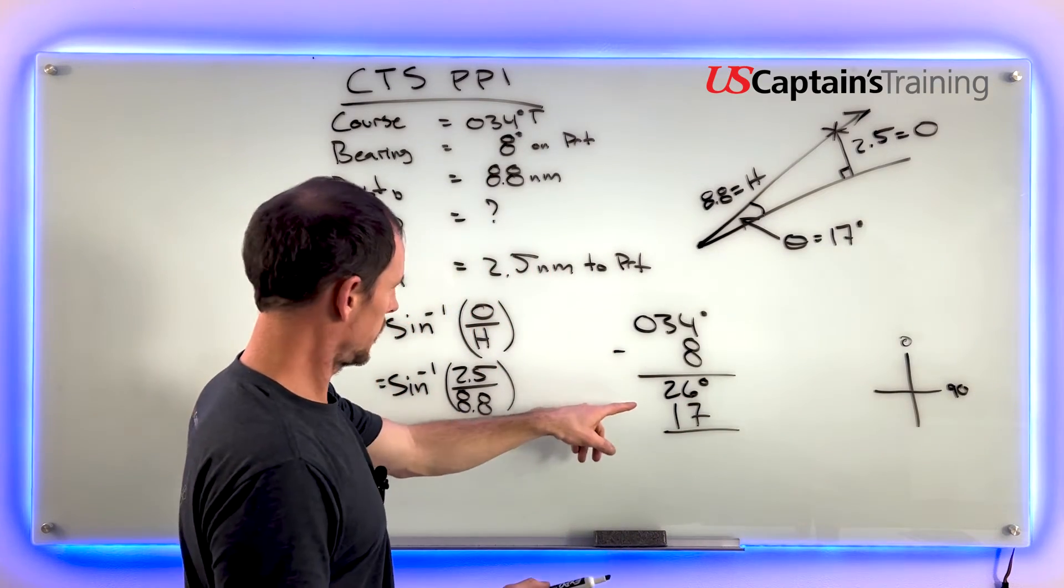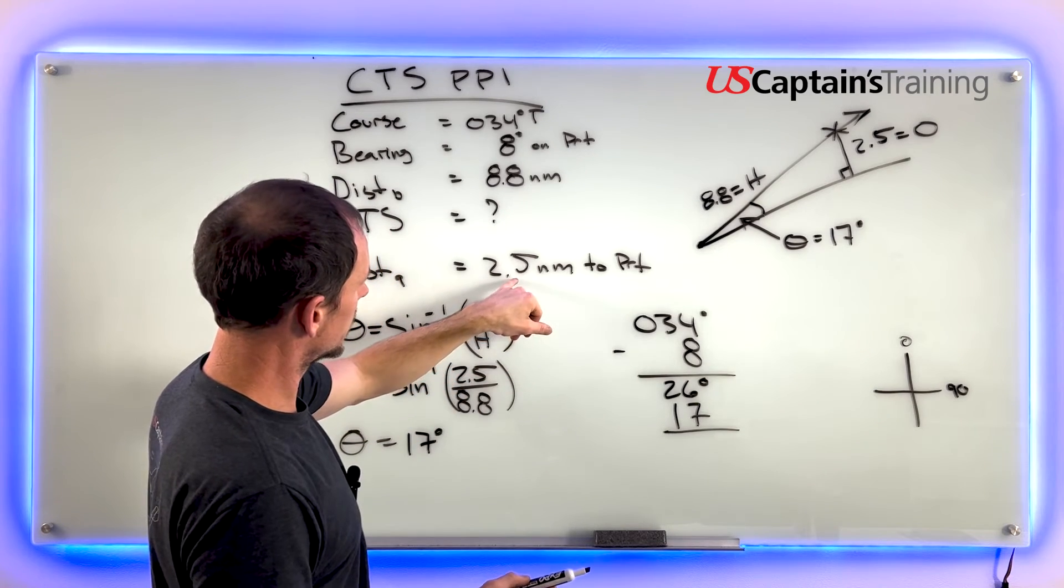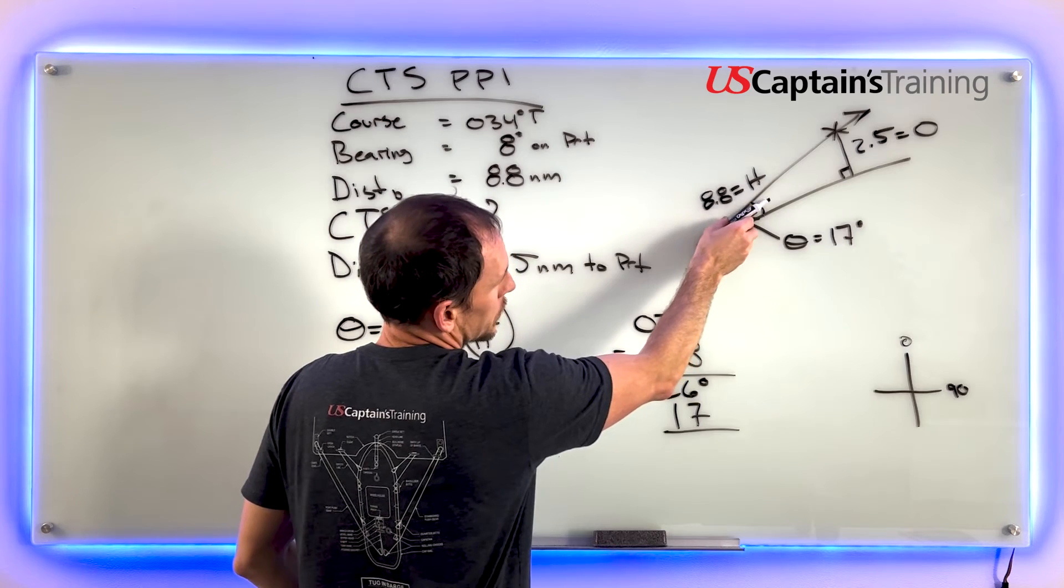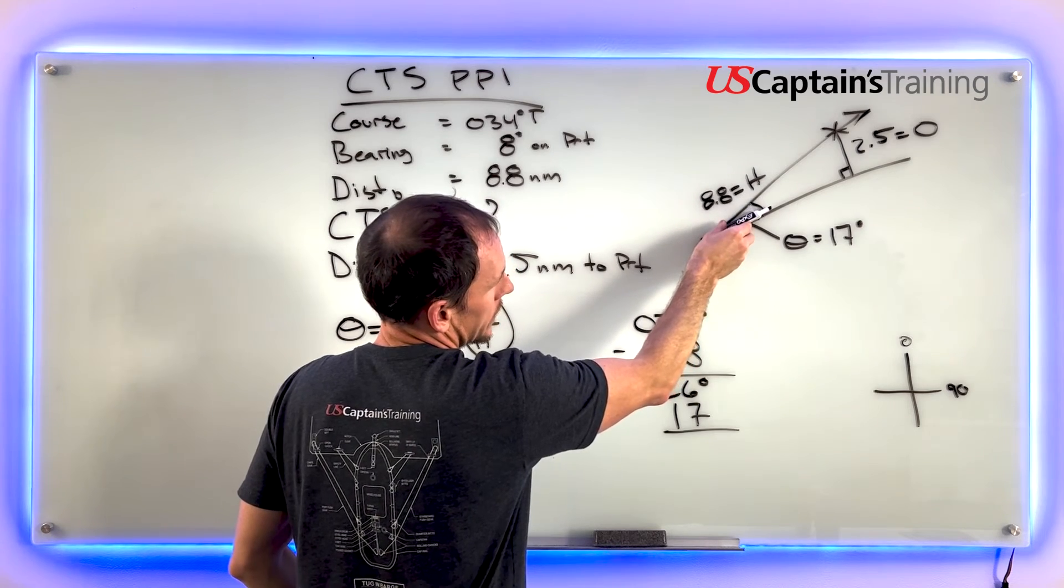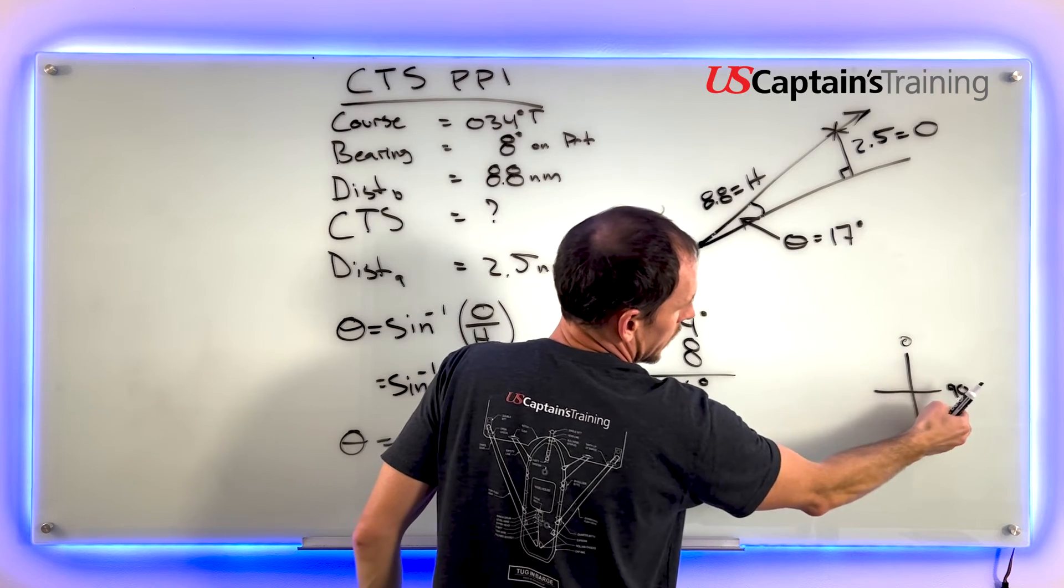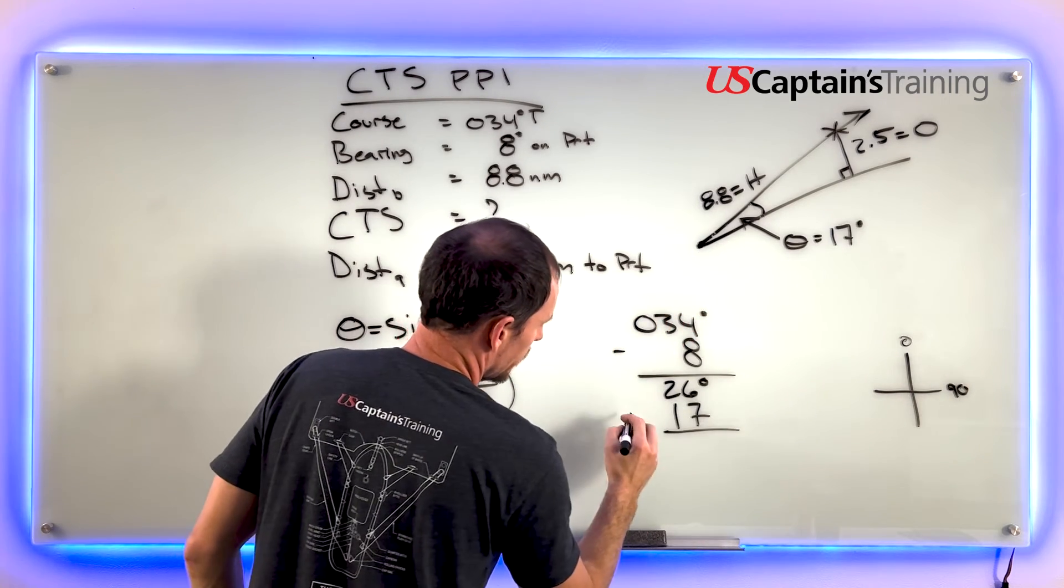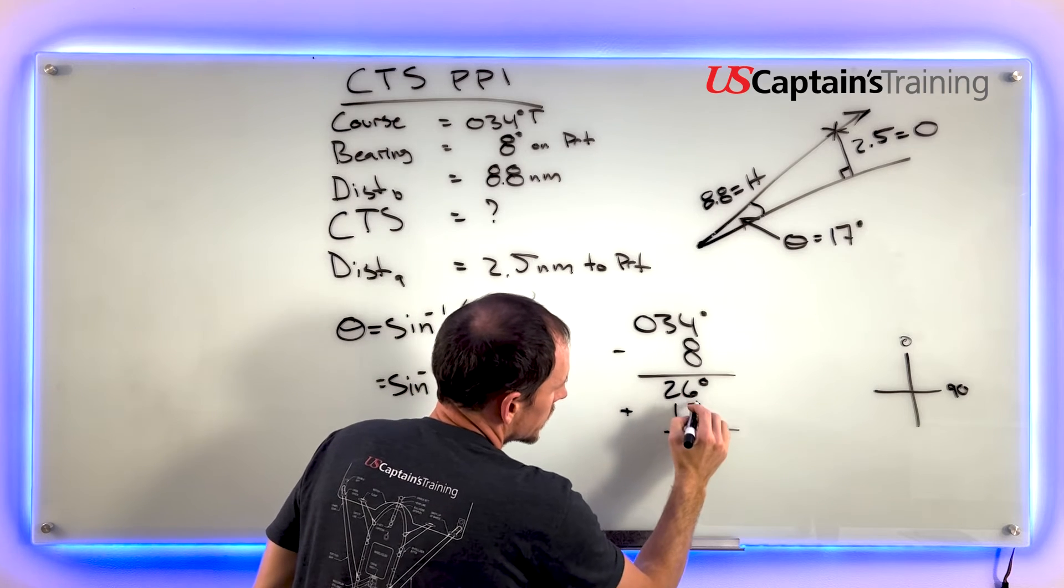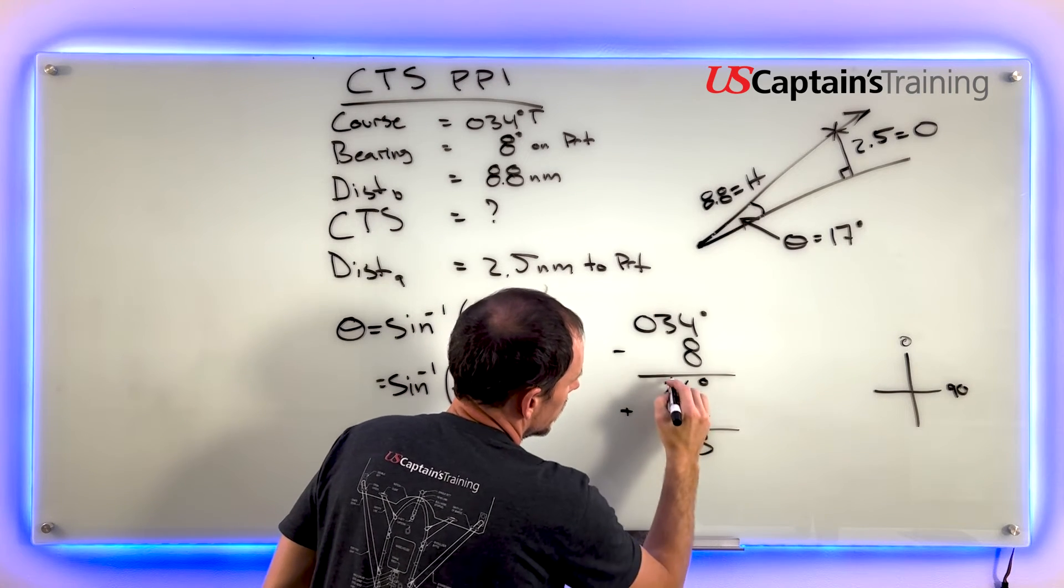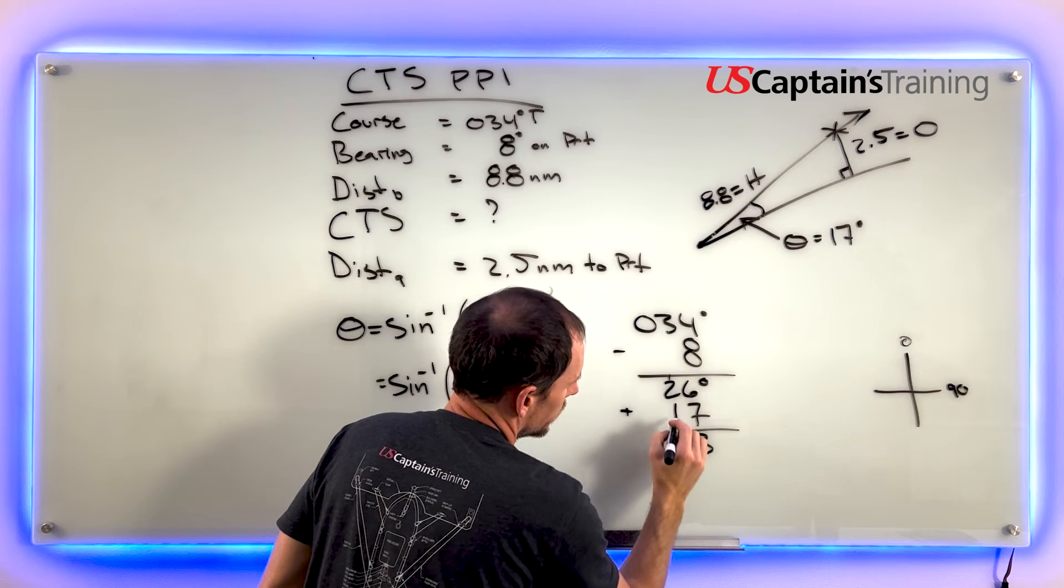6 and 7 is 13, carry the 1, 2, 3, 4. 43 degrees should be our course to steer.